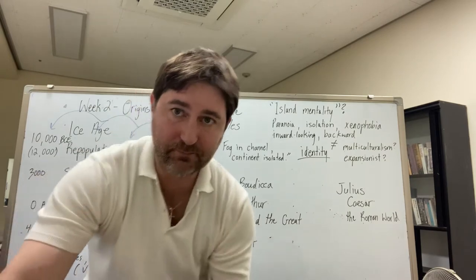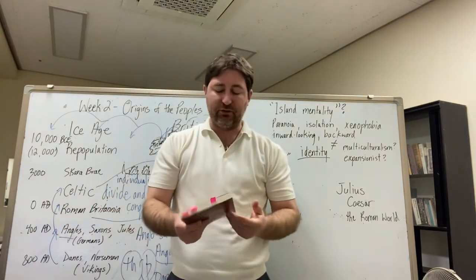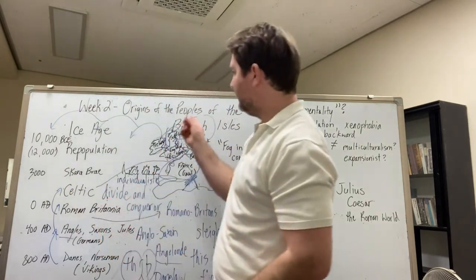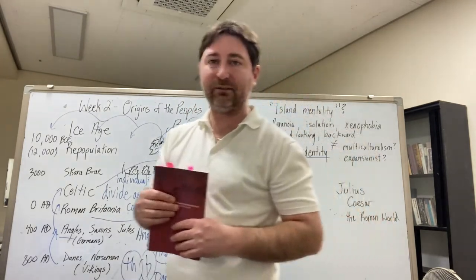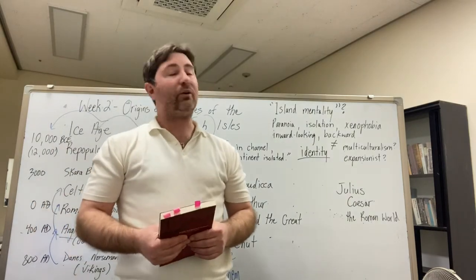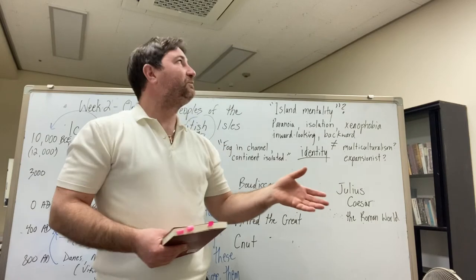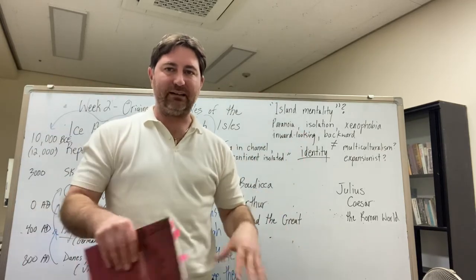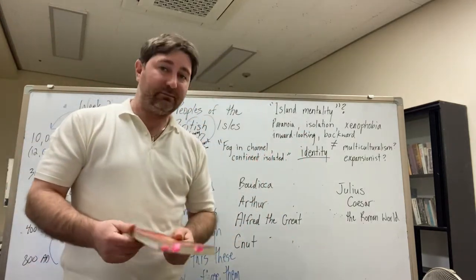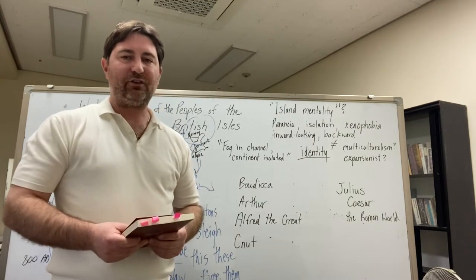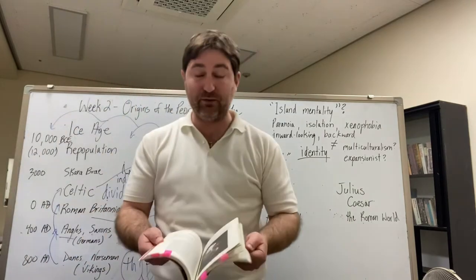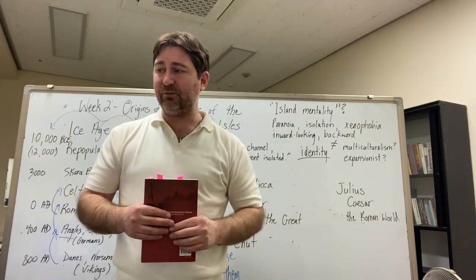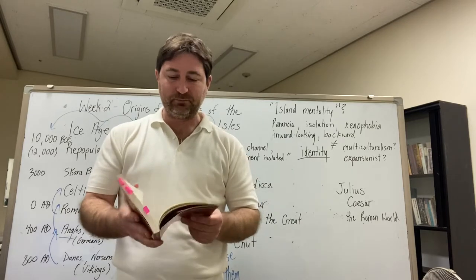We're back again. This is British and American Culture. This is going to be the second part of our lecture this week. The title is 'Origins of the Peoples of the Isles' in the British Isles. Sorry about the lighting — we don't have a real studio here, this is just my office. All we have to do is get through the second half of this lecture and finish off Chapter One.